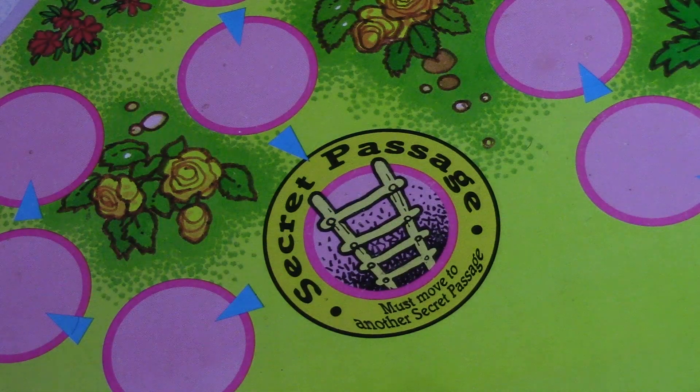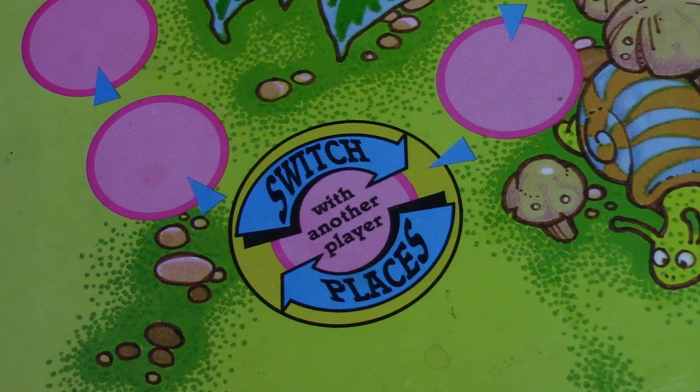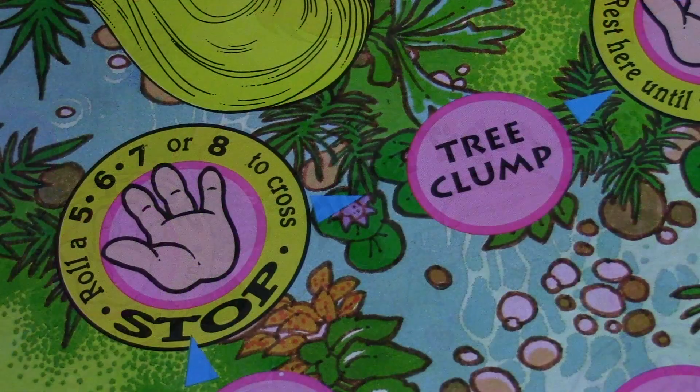Now, there are several special spaces on the board, each with their own unique rules, such as secret passages that connect to each other, switch spaces that cause you to swap spots with another troll.